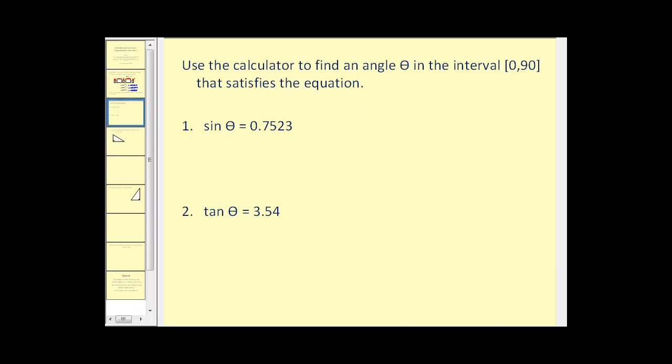And we can use inverse trig functions to solve the following types of problems. Use the calculator to find an angle theta on the interval from zero to 90 degrees that satisfies the equation. So we know that sine theta is equal to 0.7523, and our goal is to find the angle that would give this sine value.